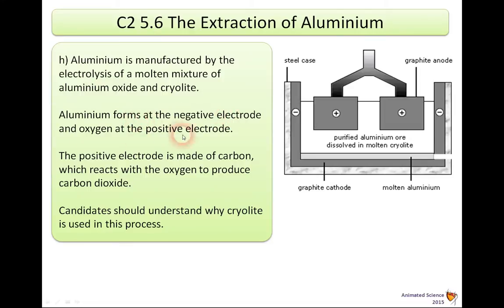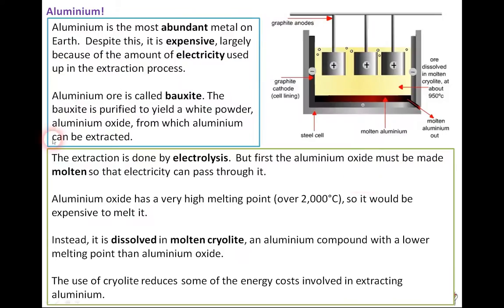Aluminium forms at the negative electrode, oxygen at the positive. The positive electrode is made of carbon, which reacts with the oxygen to produce carbon dioxide, and candidates should understand why cryolite is used in the process. So really it's about explaining what happens in this tank.